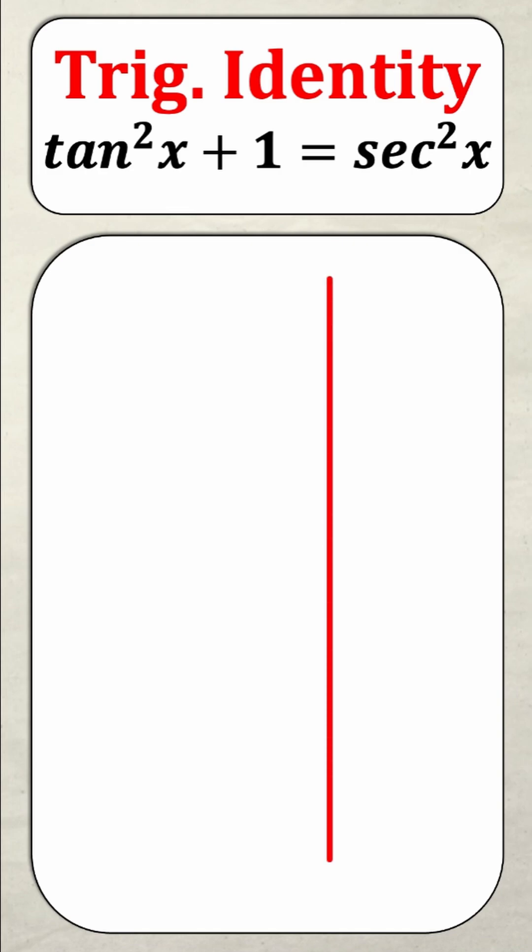So a trick that I teach my students right from the beginning is that generally you want to write everything in terms of sine and cos. And you'll actually see that this trig identity has no sine and no cos. So let's change that.